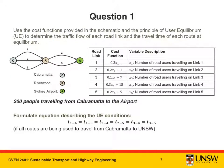Let's take a closer look at user equilibrium. The user equilibrium assignment is based on Wardrop's first principle, which states that no user can unilaterally reduce his or her travel costs by shifting to another route. Thus the travel time on each route must be equal to the minimum origin-destination travel time and, as a result, must also be equal to the travel time on each of the other routes. This is the equation that holds if all routes are being used to travel from Cabramatta to the airport.